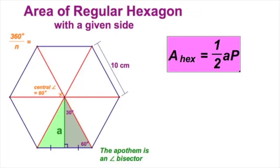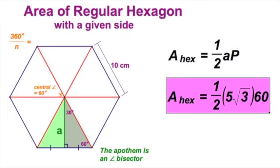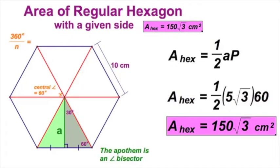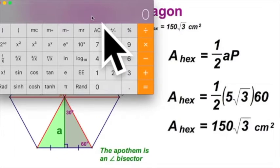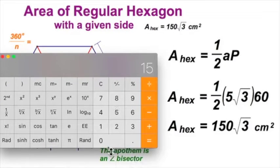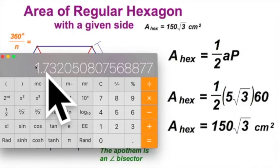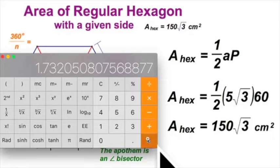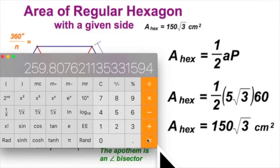I'm going to go back to this formula, 1 half apothem times perimeter. And now I'm going to put in the 5 radical 3 for the apothem. And let's see how that shakes out. I got 150 radical 3. Let's try this out. 150 times radical 3. There's my irrational number. And that's going to give me a decimal of about 259 and 8 tenths, if we're going to the nearest tenth of square centimeters.